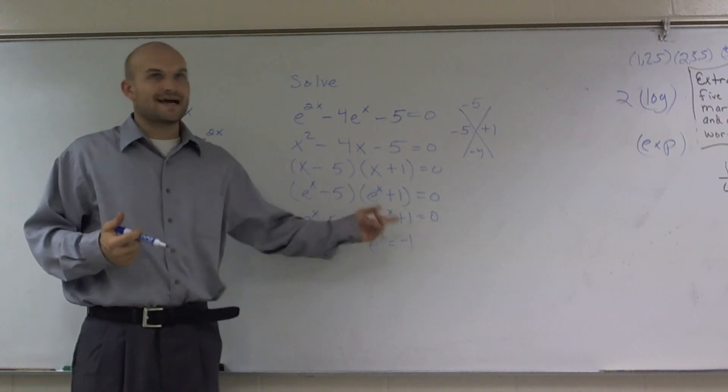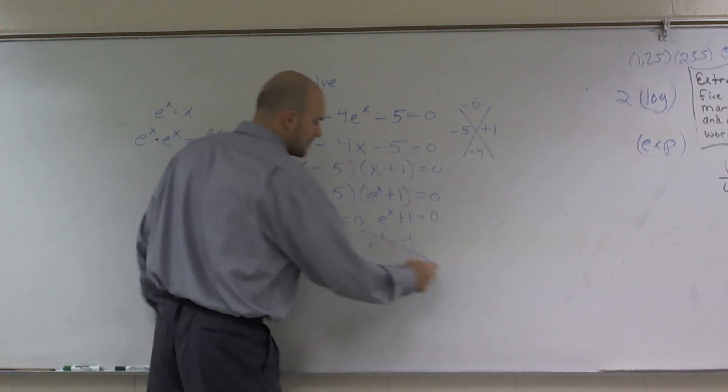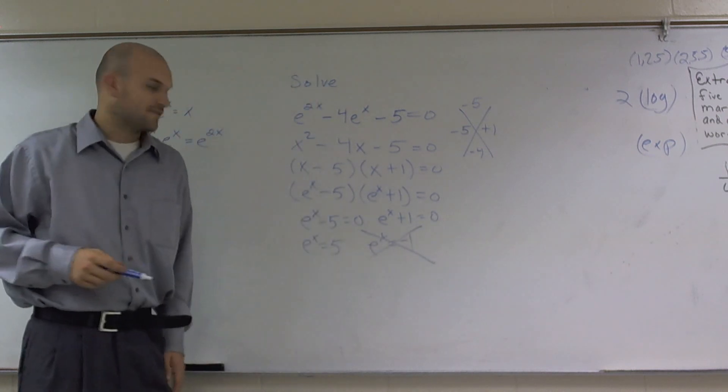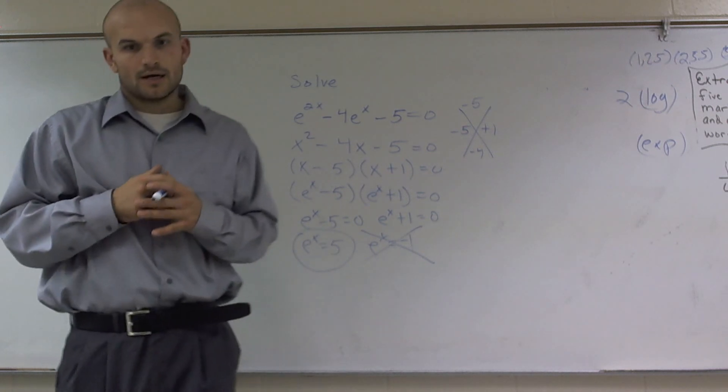Well, think about this. e raised to any number is never, ever going to give you a negative 1. So therefore, that is not your solution to the function. And therefore, that would be your only answer, where e to the x is going to equal 5.